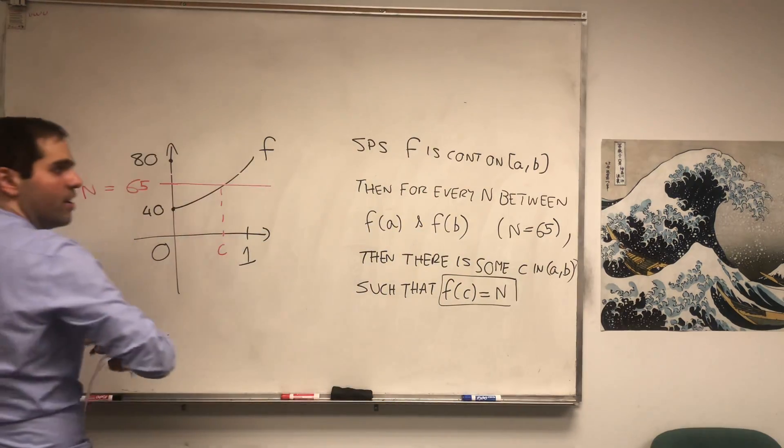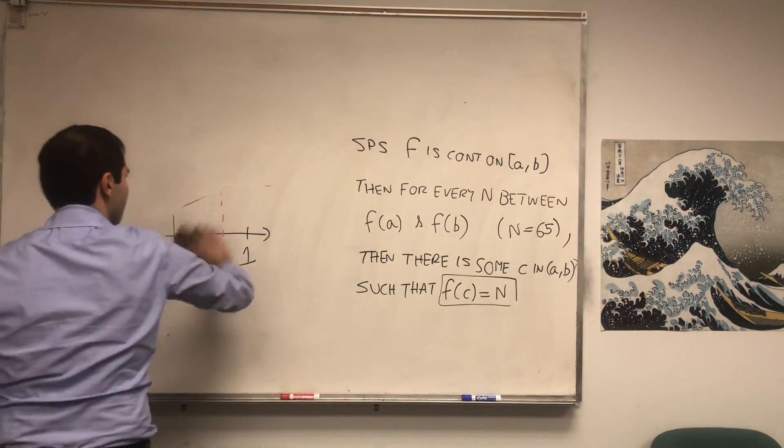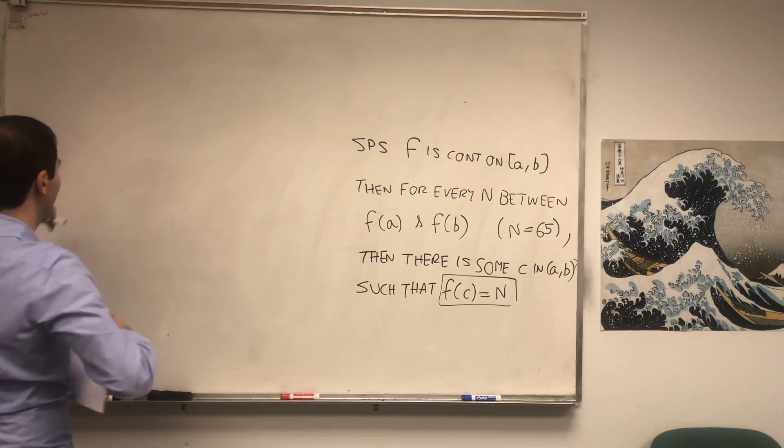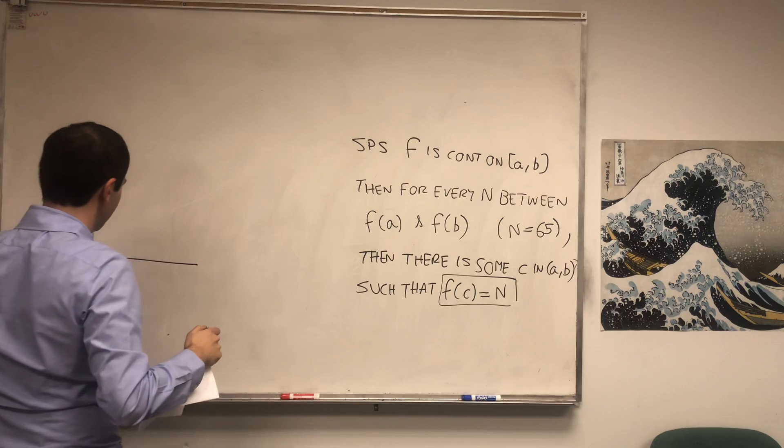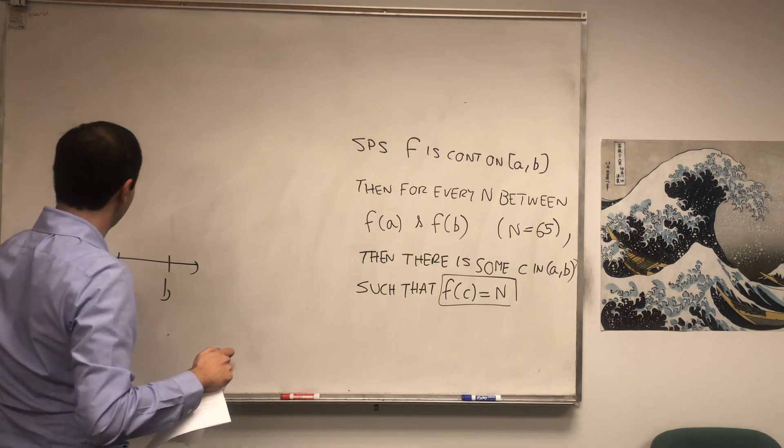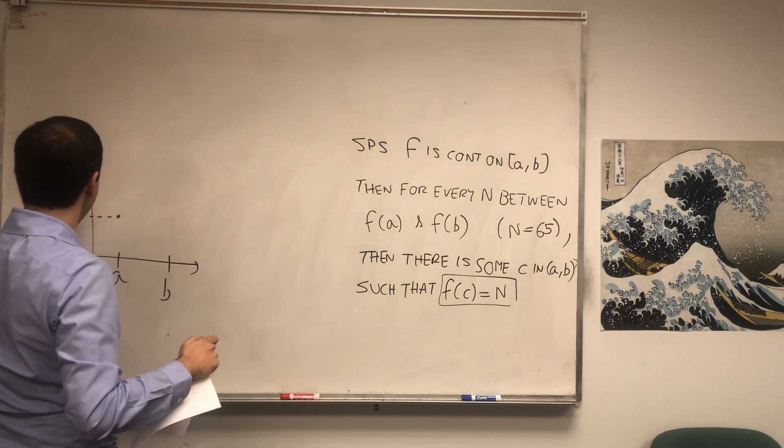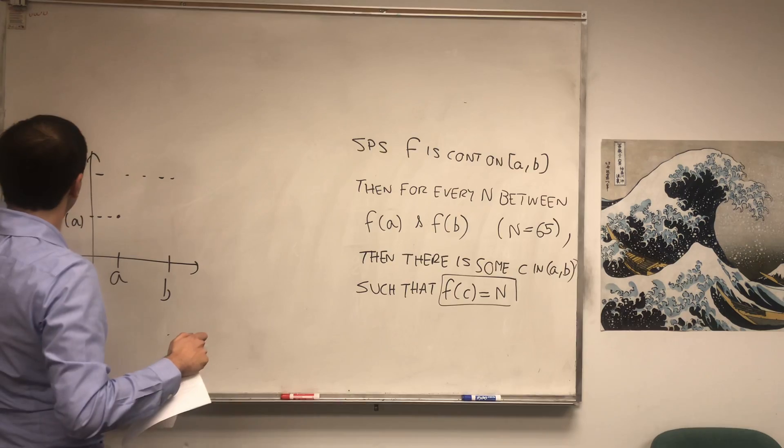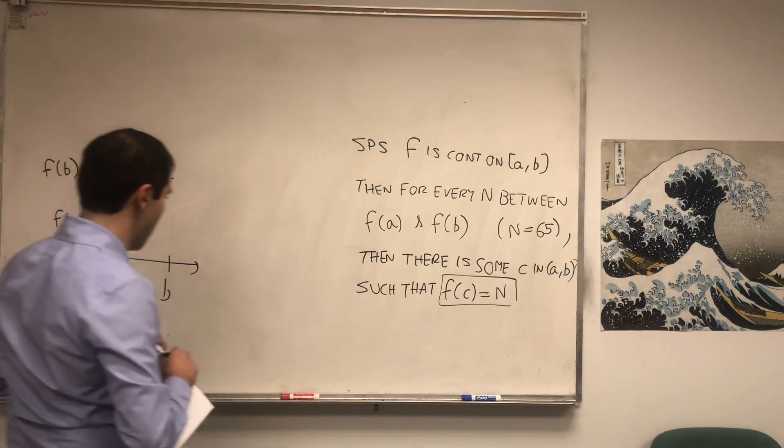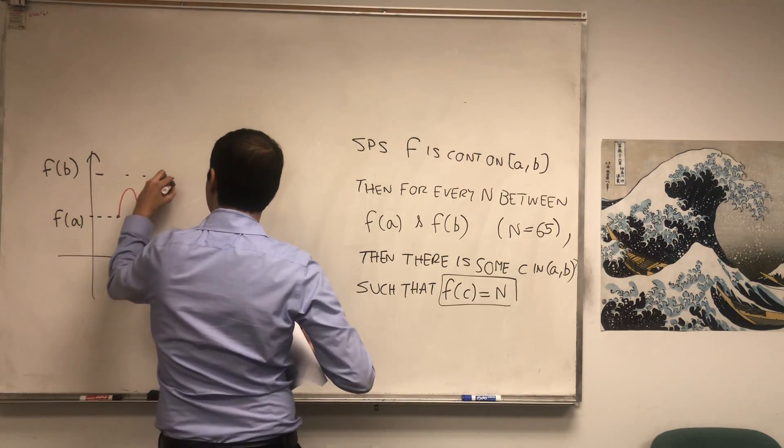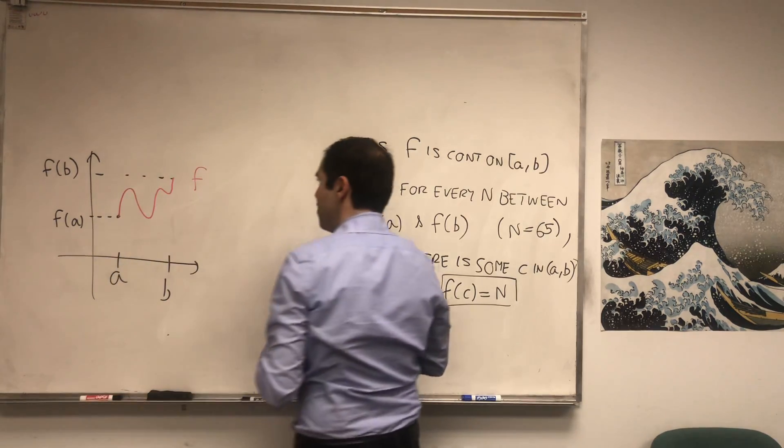So just to illustrate this with a little picture. Suppose you have a function f like here. And that's from a to b. And let's say this is f(a) and this is f(b). And f could be squiggly like this. Maybe let me exaggerate this a little bit. So this is f.